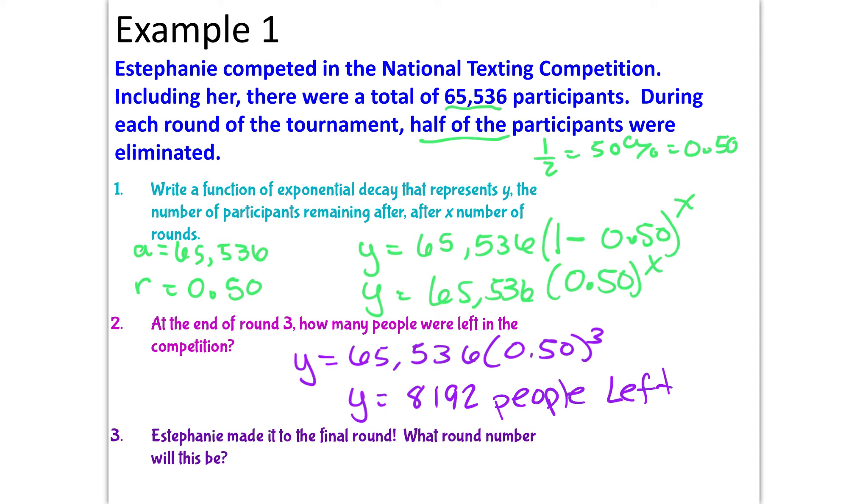Then, Estefany made it to the final round, what number round will this be? Again, this is a guess and check because you won't learn logarithms and how to solve this using logs until math 2 or 3. So we're going to guess and check. After 3 rounds there were 8,000 people left. So I'm going to try 6 rounds. Nope, I'm too low on my guess, because after 6 rounds, there's still 1,000 people left.